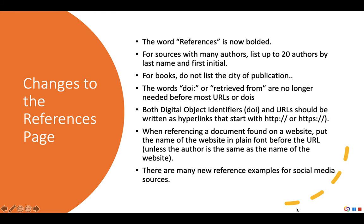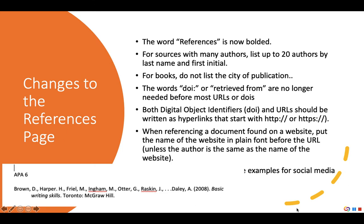There have also been some important changes to the references page. First, the word 'References' is now bolded. Next, APA 7 made a change to how sources with many authors are listed. In APA 6, if you had a source with more than 7 authors, you would list the first 6 authors and then put in ellipses followed by the last author's name. You can see that in my example here: I've listed the first 6 authors, then the ellipses, and the last author, Daily.